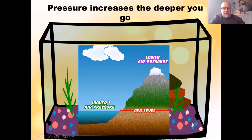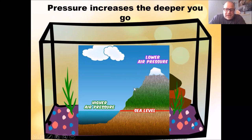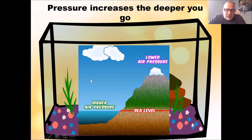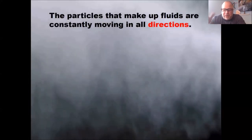Gases are also a type of fluid in physics, so this applies to them too. Up really high where the clouds are, there's very little pressure because there's almost no air above that — you get into outer space. At the top of mountains there's more air pressure, but far less than where we normally live because only those air molecules above are pushing down. At sea level, you've got all the air on top pushing down. And underwater, you've got all that air plus the water on top — at the bottom of the ocean there's the most pressure.